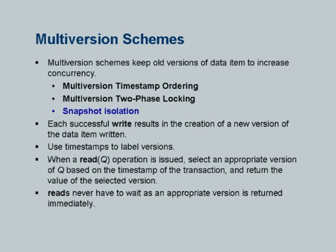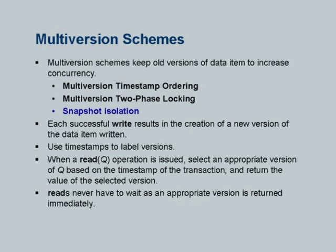That is a nice property and that is one of the major reasons that multiversioning is used. It turns out multiversion timestamp — the original one proposed — has a fair amount of overhead for implementation. It can be done, and there are systems which have done it, but current generation systems do not actually implement the multiversion timestamp protocol. However, they do implement something called snapshot isolation. There is also something called multiversion two-phase locking, but for lack of time we would not get into it.